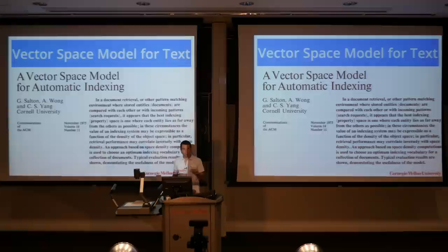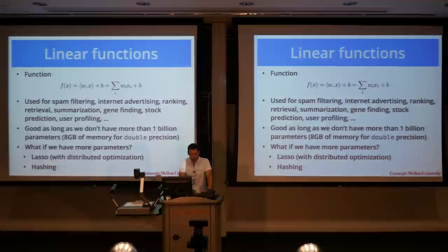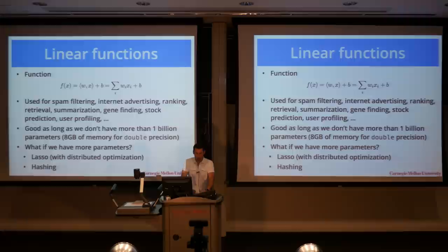In other words, I just count how many times a particular token occurs, turn this into a vector, and then do efficient inference. That gives me nice linear functions — for instance, f(x) = w·x plus maybe some constant. These models are in extremely widespread use: spam filtering, internet advertising, ranking retrieval. You would be surprised how widespread the use of those models is.